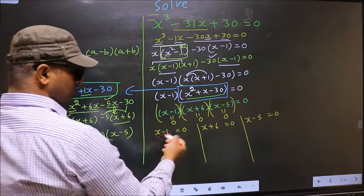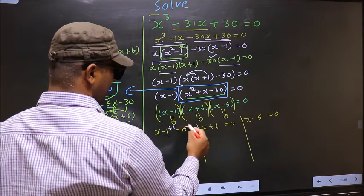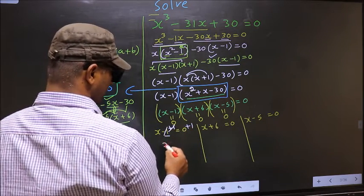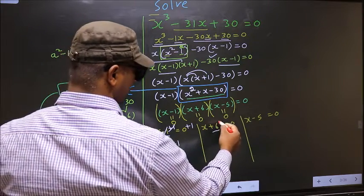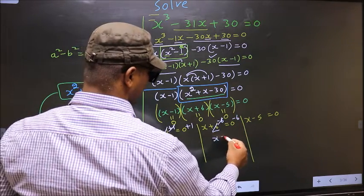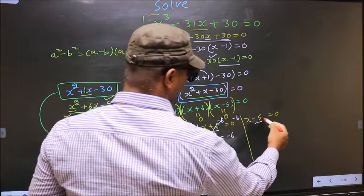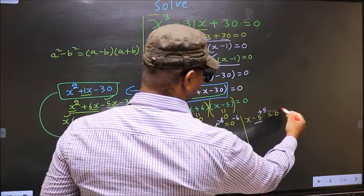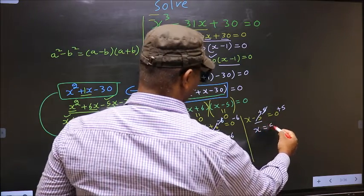To get x value from here, I should remove minus 1 so you add 1. So this cancels out, you get x equal to 1. Here I should remove plus 6, for that you subtract 6. So you get x equal to minus 6. Here I should remove minus 5, for that you add 5. So this cancels out, you get x equal to 5.